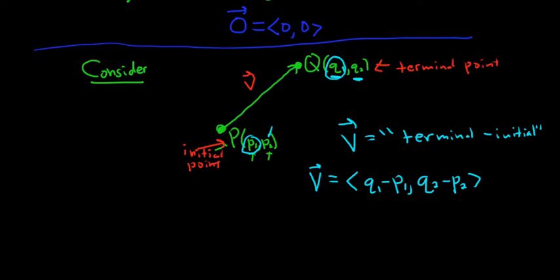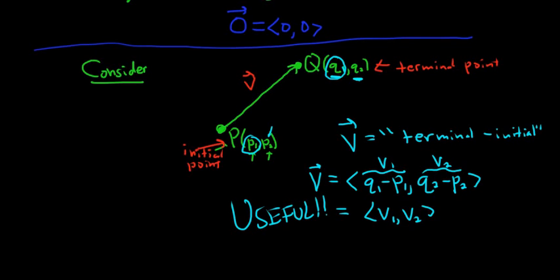And that gives you your vector. And this is V1 comma V2. So we're saying that this here is V1 and this here is V2. This is super useful. I can't emphasize how useful this thinking is. So if you ever have an initial point and a terminal point, it's always terminal minus initial to get the vector.